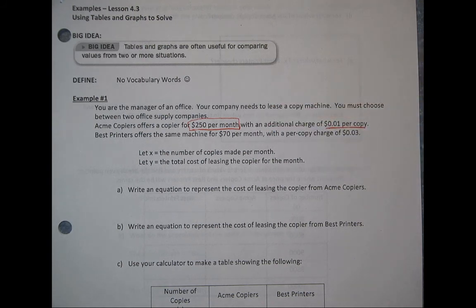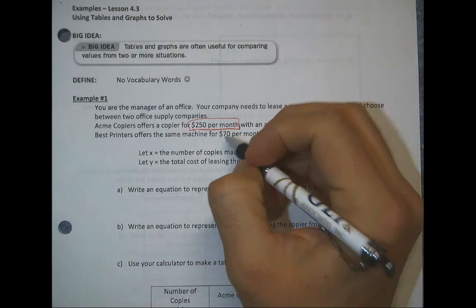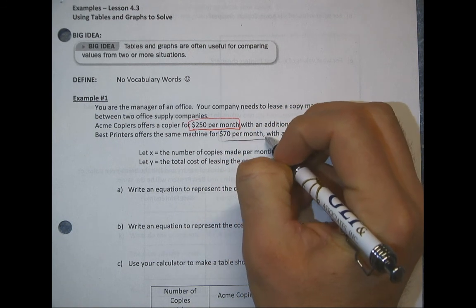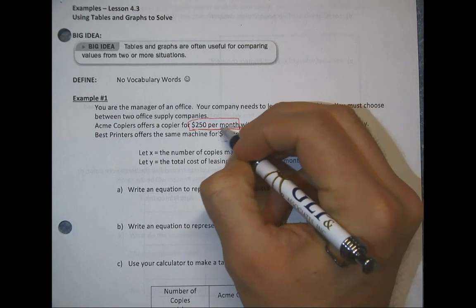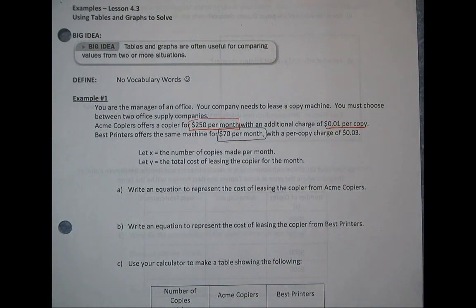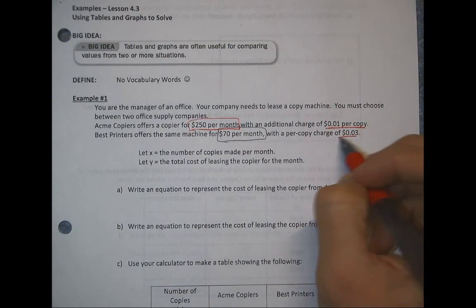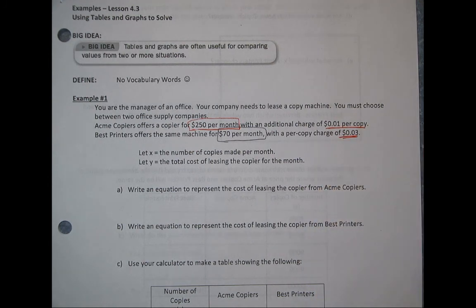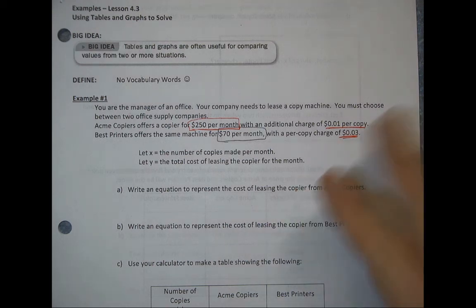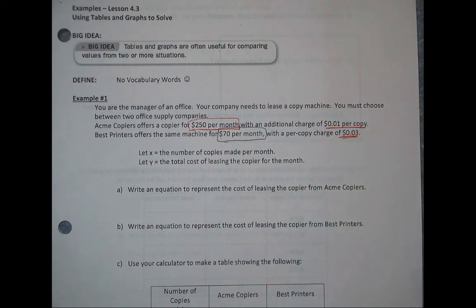Best Printers offers the same machine for $70 a month — much higher monthly fee — but they charge $0.03 per copy. You might say that's only $0.02 more per copy, but in general, in an office you make a whole lot of copies. So it's going to be dependent on how many copies you make.